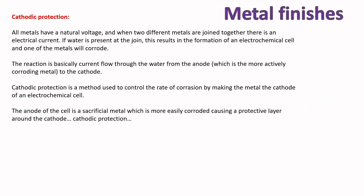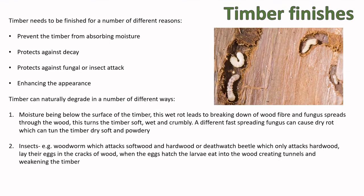The last metal finish is cathodic protection. All metals have a natural voltage; when two metals are joined and water is present, an electrochemical cell forms and one metal corrodes. Current flows through the water from the anode (positive) to the cathode (negative). Cathodic protection controls the rate of corrosion by making the metal you want to protect the cathode of the electrochemical cell — that's where the name 'cathodic protection' comes from.